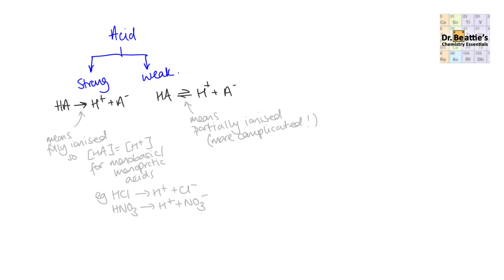On the reverse, weak acids have a reversible arrow, meaning they're partially ionized. This is more complicated, and in subsequent videos we'll be going through that.